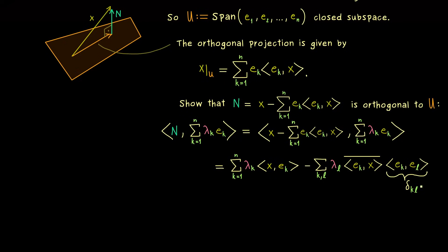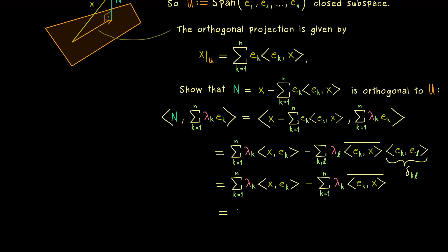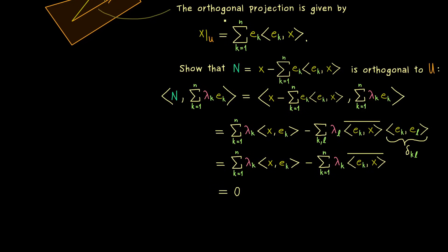The orthogonality in the ONS makes everything simpler: what remains is a difference of two sums, and these two sums are exactly the same. We just exchange the order in the inner product to remove the complex conjugation, and we get 0. This shows that the normal component N is orthogonal to the subspace U. So, for a finite ONS, the orthogonal projection of a vector x looks like this sum.